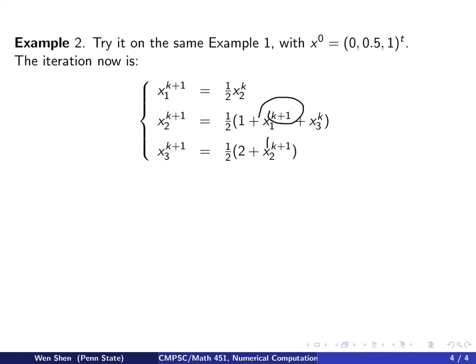Like this one, we'll be using the newly computed value, and also this one will be using the newly computed value, because x1k plus 1 is just computed, and x2k plus 1 is also computed.